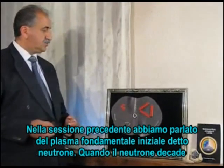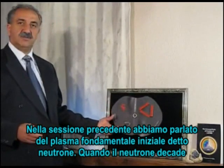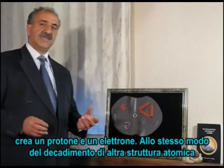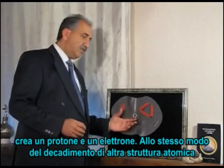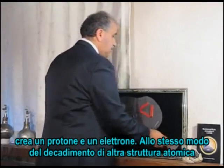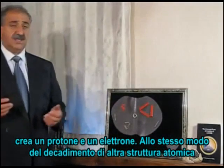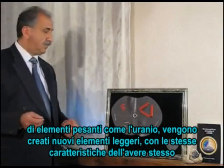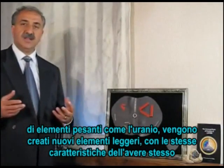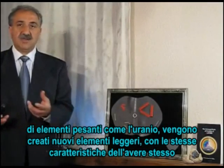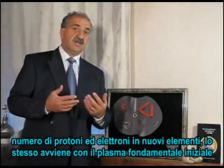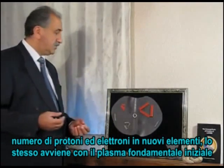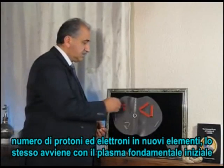In the previous session, we spoke about initial fundamental plasma, which is what is called a neutron. When a neutron decays, it creates a proton and an electron. But as with any other atomic structure decay of heavy elements like uranium, new and lighter elements are created, but of the same characteristics — having the same number of protons and the same number of electrons, two new elements.